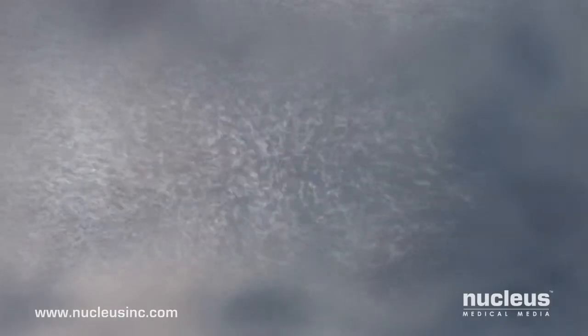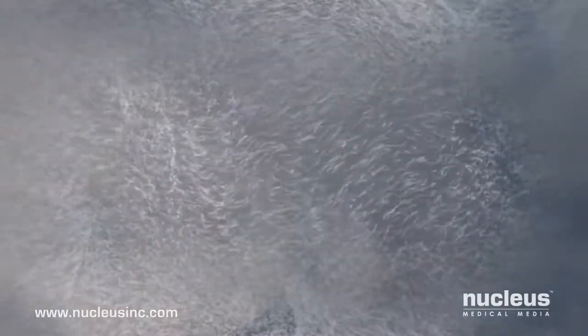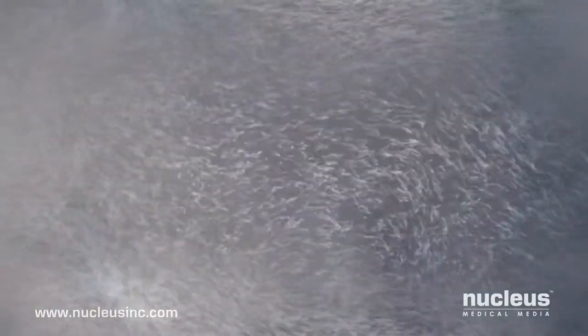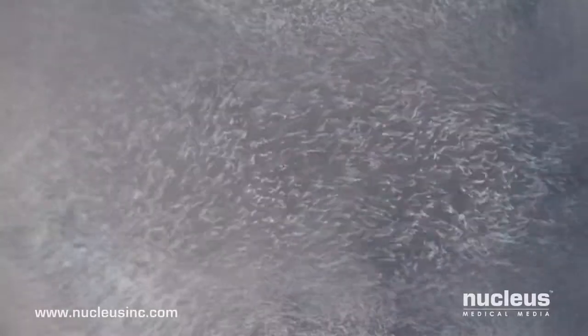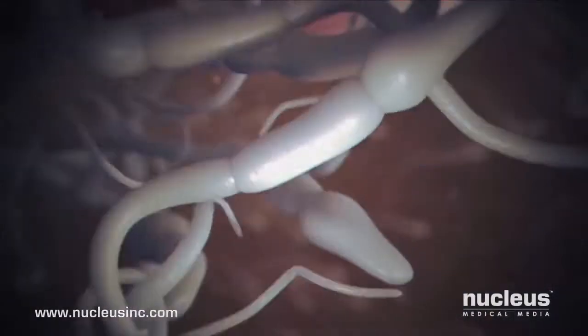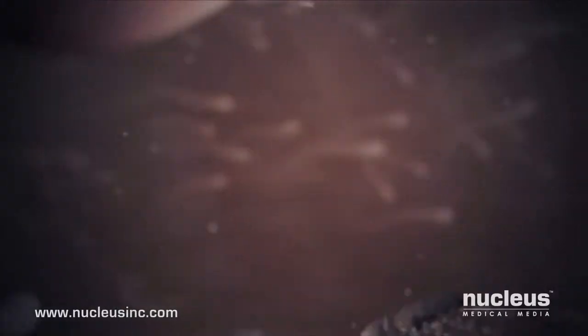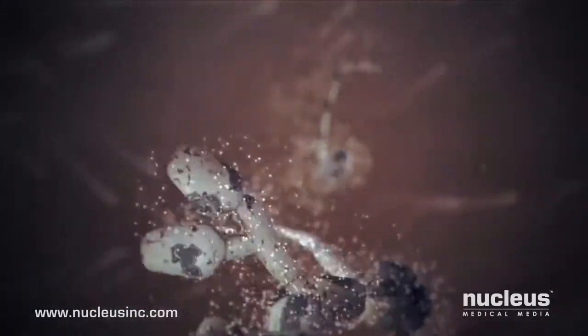During sexual intercourse, about 300 million sperm enter the vagina. Soon afterward, millions of them will either flow out of the vagina or die in its acidic environment.